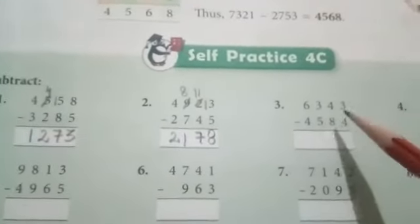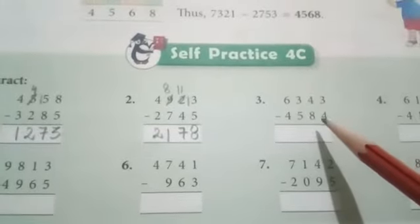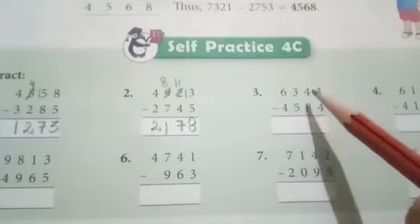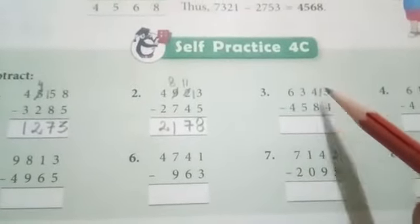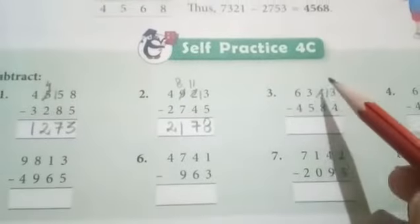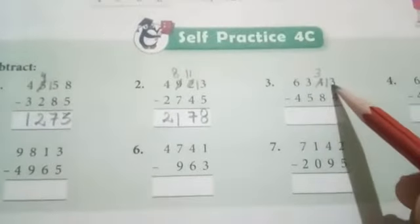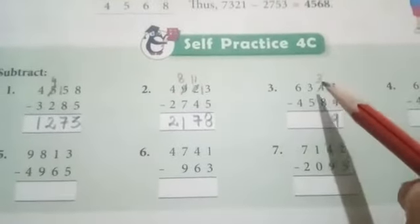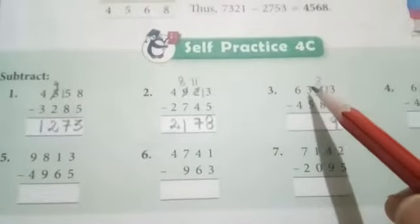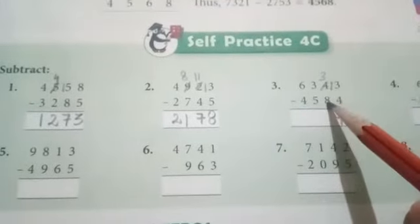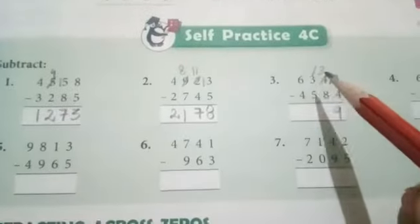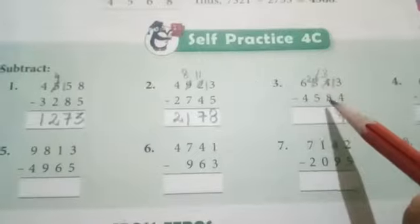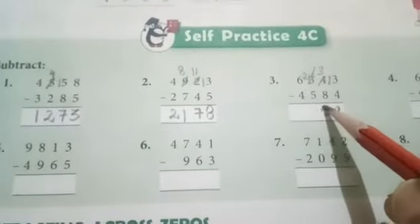In the third question, our question is 6343 minus 4584. Now 3 is smaller than 4, so we take one borrow from here — it becomes 13. Here 4 minus 1 becomes 3. Now 13 minus 4 is 9, so we write 9 here. Then 3 minus 8: since 3 is smaller than 8 we cannot subtract, so we take one borrow again, making it 13, and the digit borrowed from becomes 3 minus 1 which is 2. Now 13 minus 8 is 5, so we write 5 here.